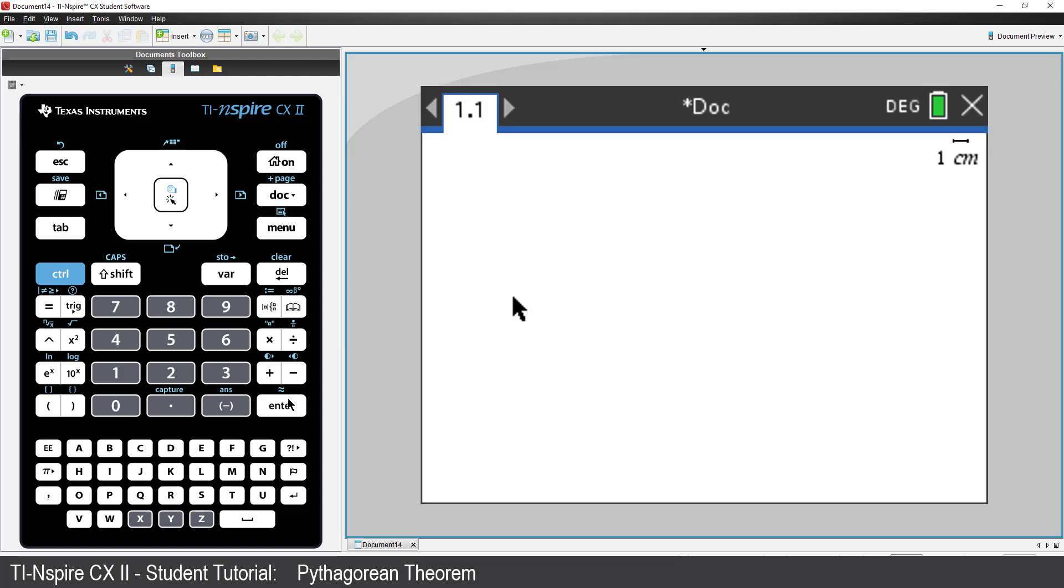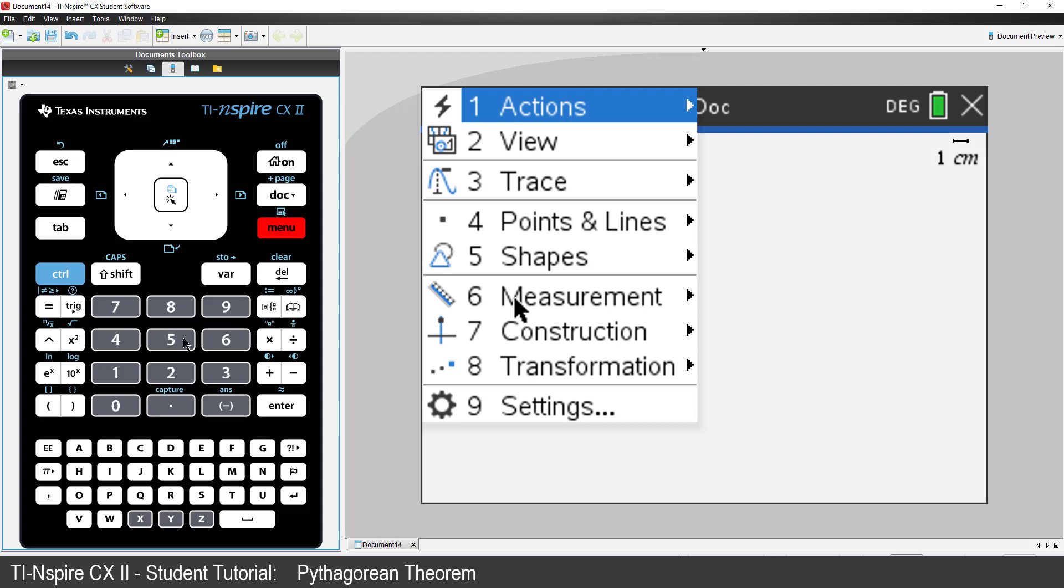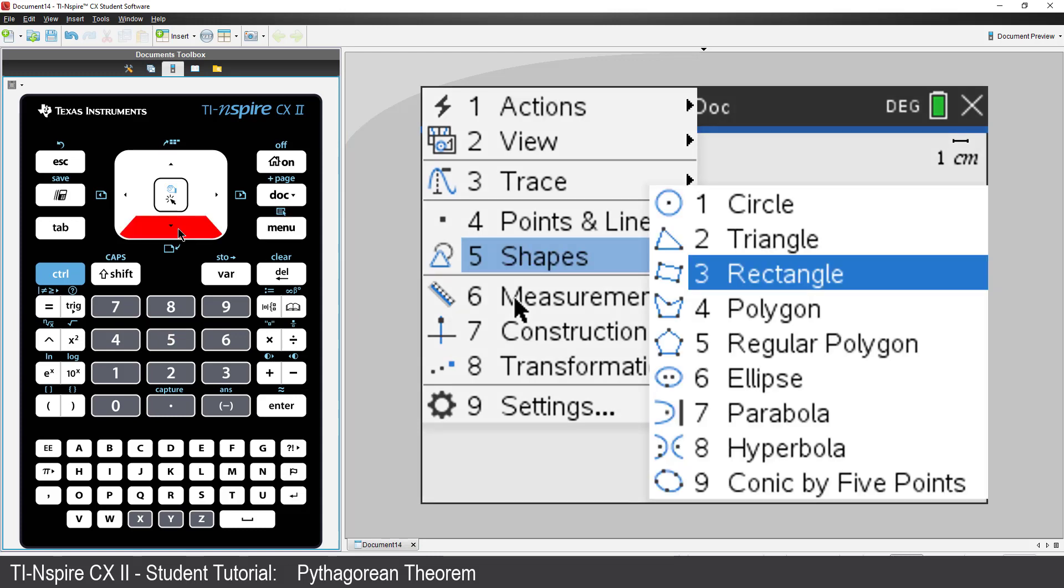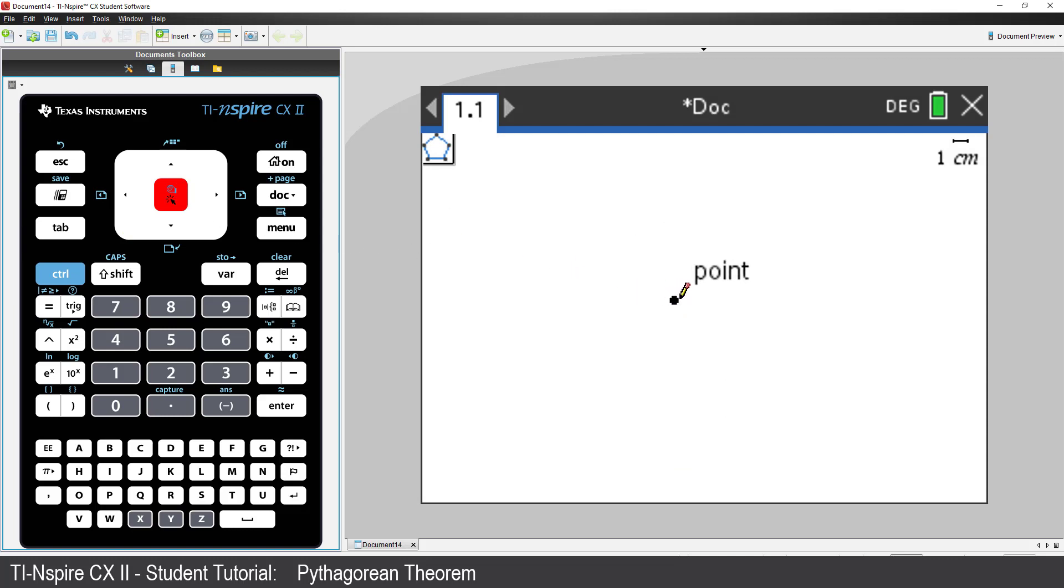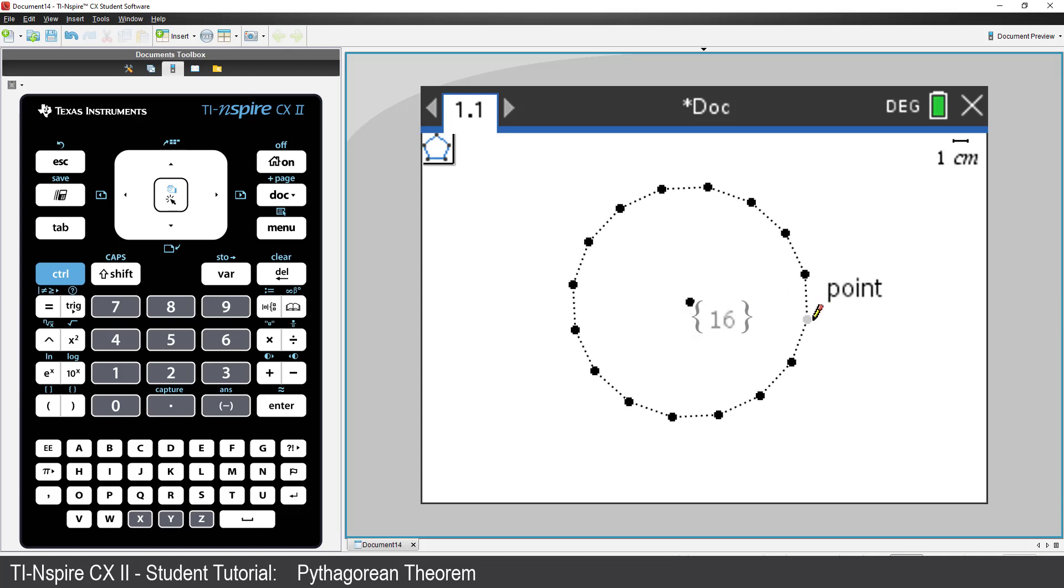It's time to create some shapes. Press Menu, Shapes, and select Regular Polygon. Move the pencil to the centre of the screen and then click. This is the centre of the regular polygon. As you move the mouse, a hexadecagon outline is formed.